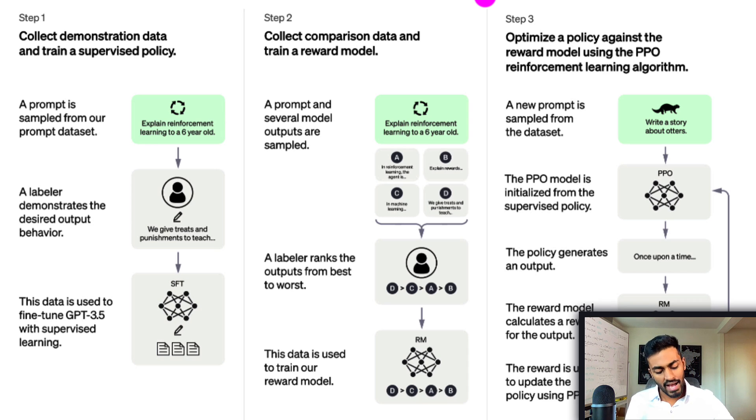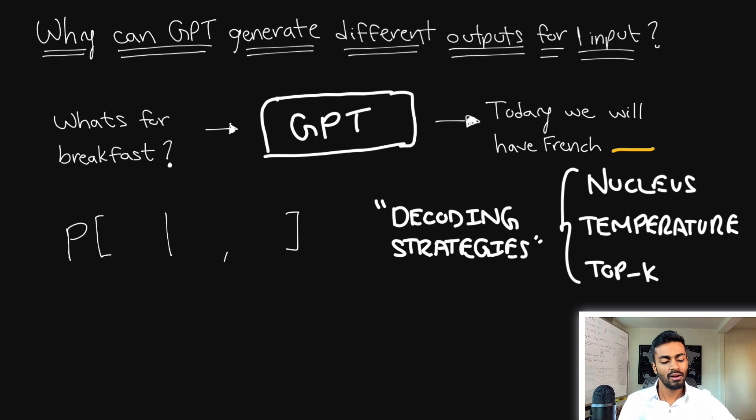First of all, when we have a supervised fine-tuned model, we want to generate at this stage multiple responses for the same input prompt. My big question here was: why can GPT generate different outputs for just one input? Let's say we have a GPT model taking an input, we'll call this 'what's for breakfast', and the output of this model is for every single timestamp it will generate one word at a time. It first generates 'today', then 'we', then 'will', then 'have', then 'French', and now we are at this stage to generate the sixth word. Let's call this entire response W.